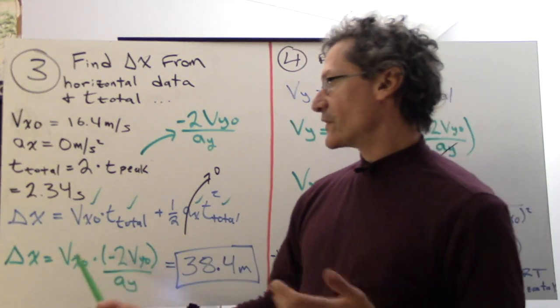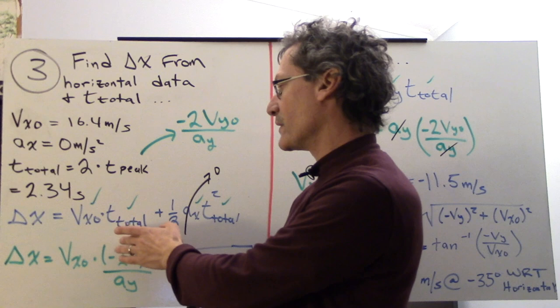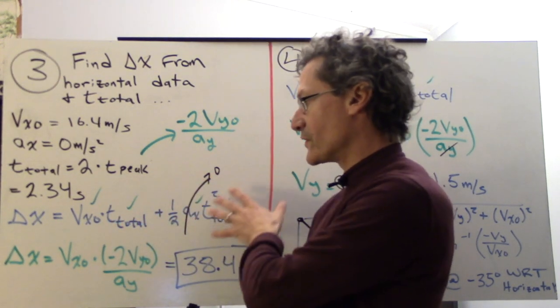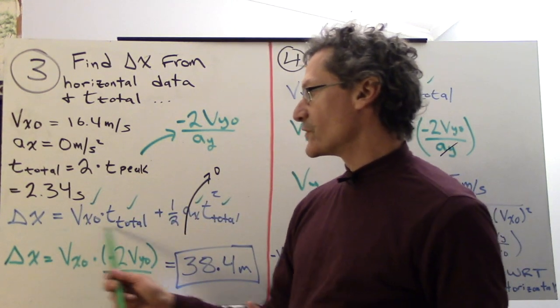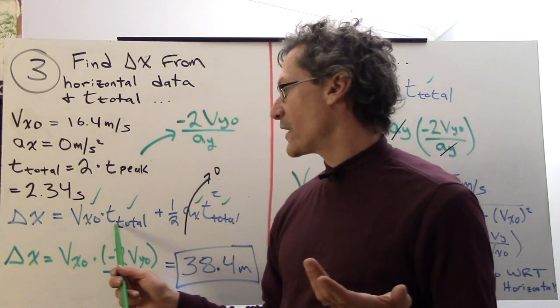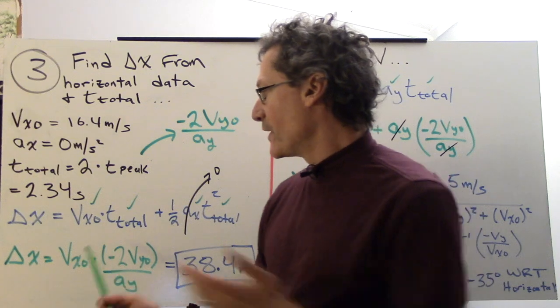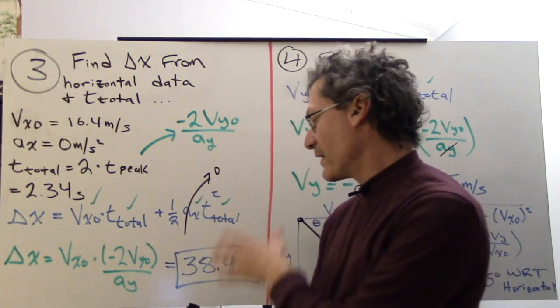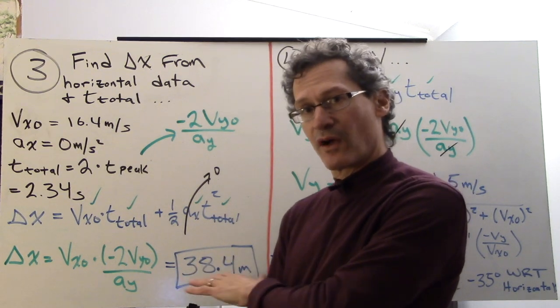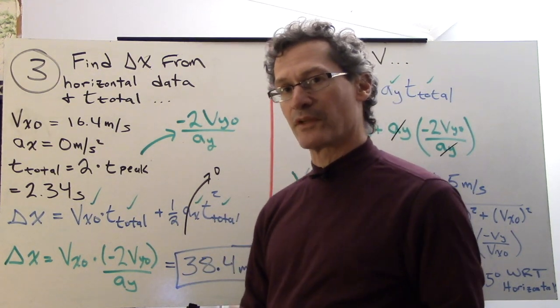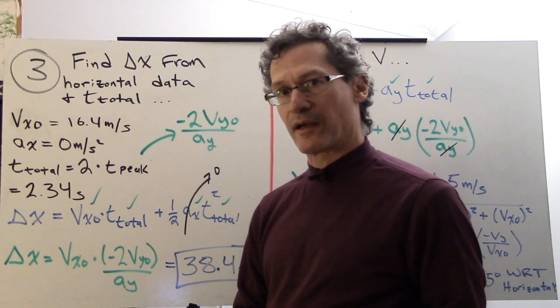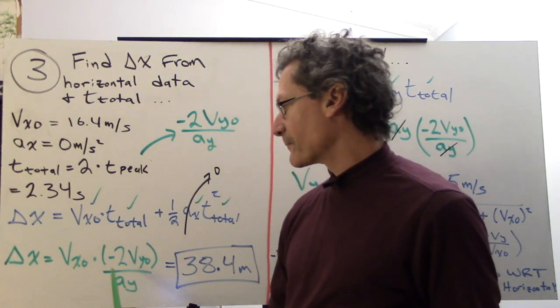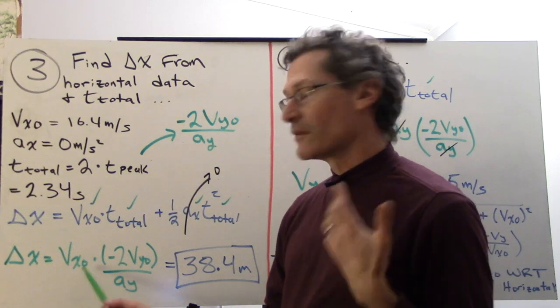Delta x is vx-naught times t-total plus one half ax*t-total squared. This is zero. So it's just these two multiplied together, v times t. And if I substitute this in there and bring in the other values, I'll get the same thing, a range of 38.4 meters. So the golf ball went 38.4 meters from the initial swing, based on this problem. And so we get the range delta x.